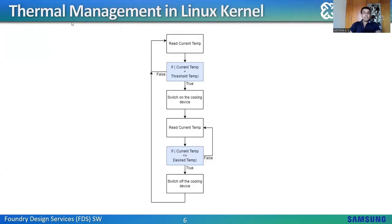Now let's see how thermal management is done in the Linux kernel. Temperatures are read from temperature sensors and compared with a threshold. If the temperature is less than the threshold, after some delay the temperature is read again. If the temperature is greater than the threshold, it means the associated temperature has increased, so cooling devices will be switched on. Once the cooling devices are switched on, current temperatures are read again and compared with the desired temperature to check if the SoC has cooled down. Once the current temperature reaches the desired temperature, cooling devices will be switched off. This cycle repeats, and the switching on and off of cooling devices is done basically to save power.